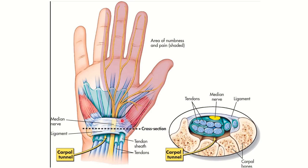Looking at this picture, we can see the flexor retinaculum of the wrist. Below the flexor retinaculum there is a tunnel named the carpal tunnel. In the carpal tunnel, nine tendon sheaths are present. In the upper part is the flexor digitorum superficialis and in the lower part the flexor digitorum profundus, along with another tendon which supplies the hand.